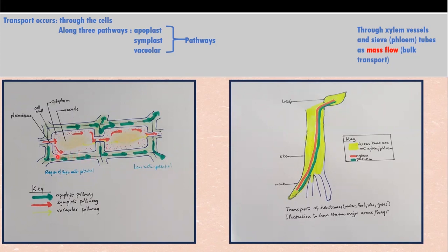In the vacuolar pathway, substances move from the vacuole of one cell, through the cytoplasm, through the plasmodesmata, into the cytoplasm of the next cell and then into its vacuole. This is how substances are transported through the cortex, epidermis, and areas that are not xylem. In the xylem and phloem, substances are transported in mass — bulk transport — where water and mineral salts move together in the xylem, and food substances such as sucrose move in bulk through the phloem.